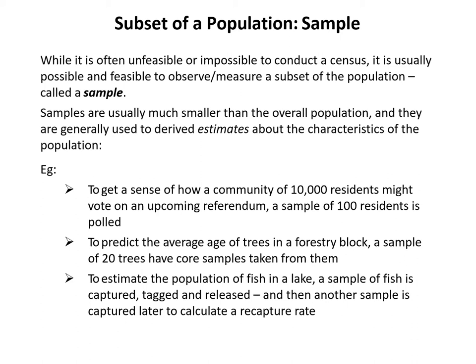Since most of the time it's not possible or feasible to do a census, most statistics is focused on the next best option: conducting what's called a sample. A sample is essentially a subset of the population, usually much smaller than the overall population and of a size that is feasible to conduct. Because a sample is not equal to the entire population, the data we obtain doesn't give us information about the entire population with absolute certainty, but samples do allow us to derive estimates about characteristics of populations we're interested in knowing.